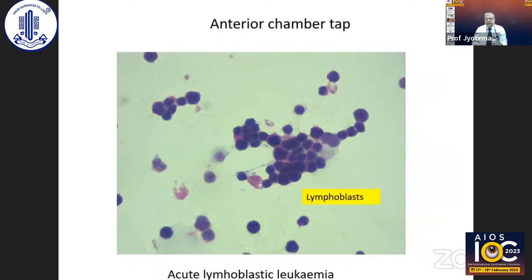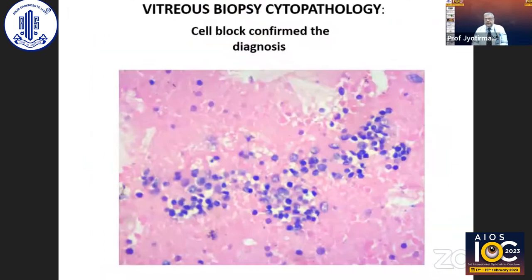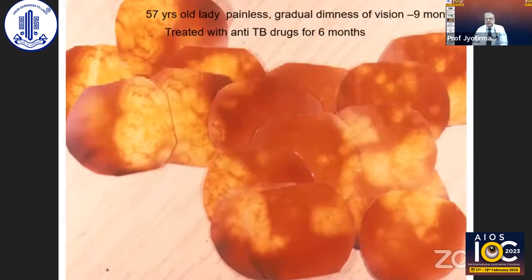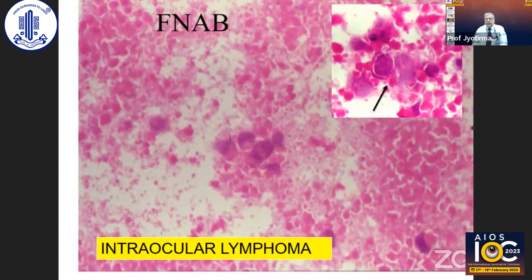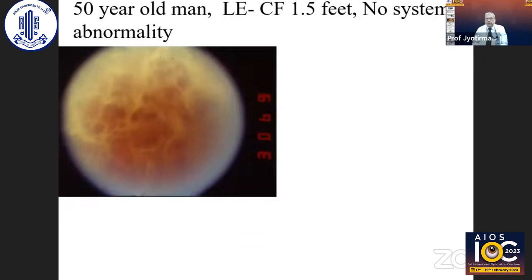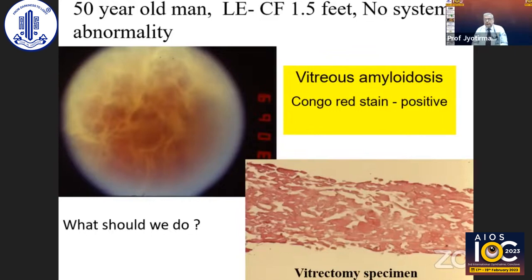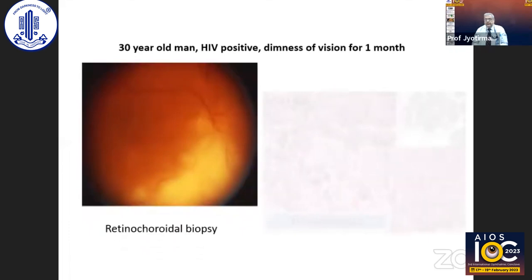This is a case with leopard-skin-like appearance; vitreous biopsy showed atypical lymphoid cells. Cell blocks showed large lymphocytes with pleomorphism and necrosis of the tissue. A case diagnosed as serpiginous choroiditis had fine needle aspiration biopsy showing large lymphoma cells with necrosis; MRI showed CNS lymphoma. So for uveitis at the extremes of age, think of masquerade syndrome. A 55-year-old lady with vitreous veil-like strand opacity — one should rule out endophthalmitis. Vitrectomy showed the conglomerate strands were positive for amyloidosis — not endophthalmitis, but vitreous amyloidosis.